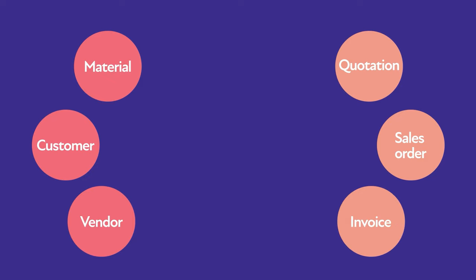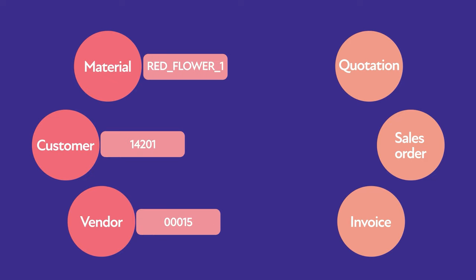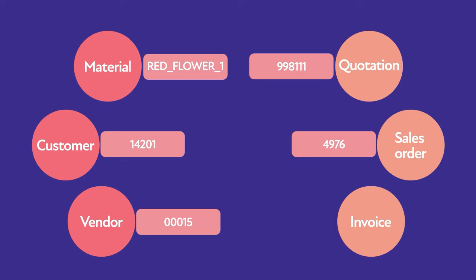Each of these objects has its own unique number or unique technical name, so it is easy to identify. For example, we can have material red_flower_one, customer number 14201, vendor 15, quotation document 998111, sales order 4976, or invoice 1123217.